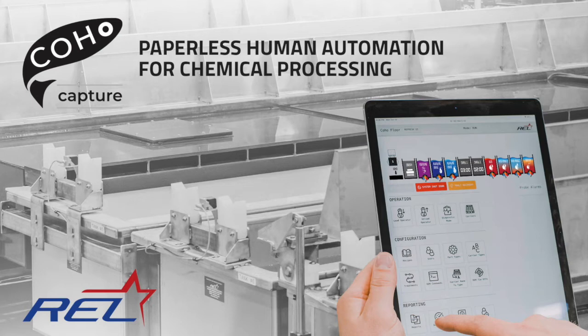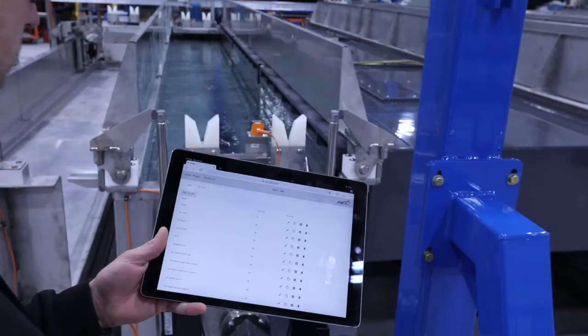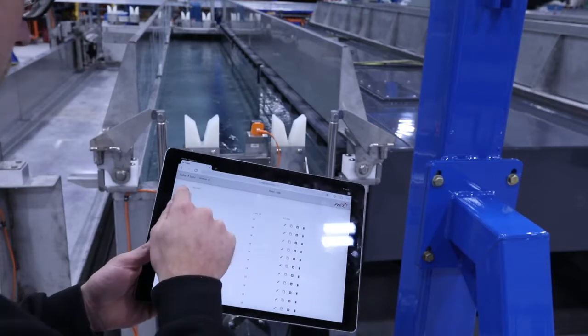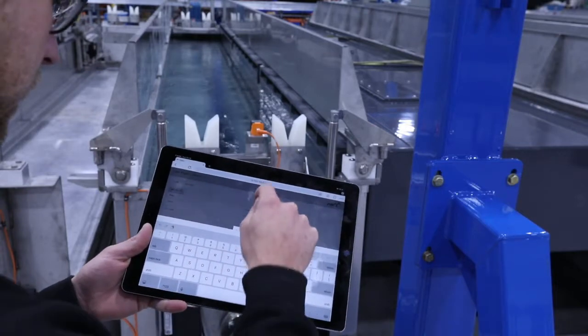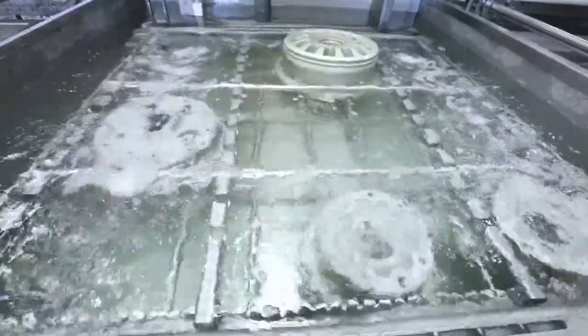Coho Capture is the Industry 4.0 REL solution for safe, timestamped, paperless part processing for the fluorescent penetrant inspection and chemical etching plating industries.